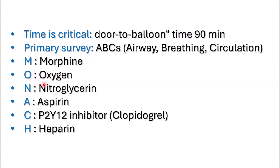N stands for nitroglycerin. Nitroglycerin is given sublingually to reduce chest pain by dilating the coronary arteries and improving blood flow to the heart. It can be administered every 5 minutes and up to 3 doses, but be careful if the patient has low blood pressure.